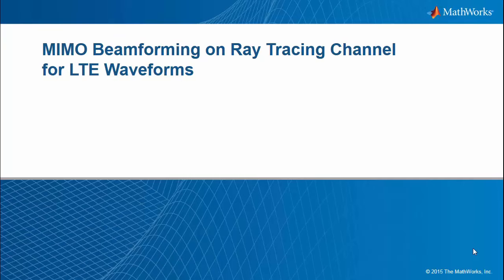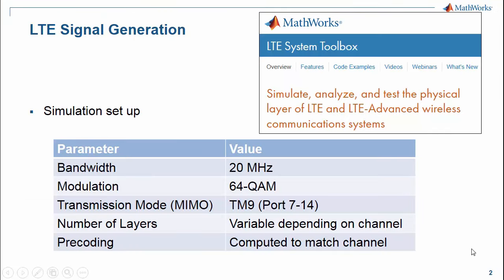This video presents an example of MIMO beamforming on a ray tracing channel using LTE waveforms. Products used include MATLAB, LTE system toolbox, and phased array system toolbox. We generate a 20 MHz LTE signal with 64 QAM modulation, non-codebook-based MIMO transmission mode 9, and we adjust the number of layers and the precoding depending on the propagation channel characteristics.